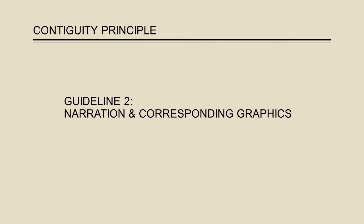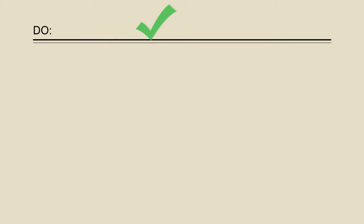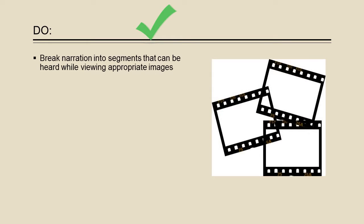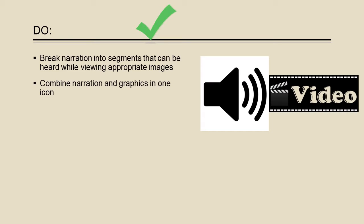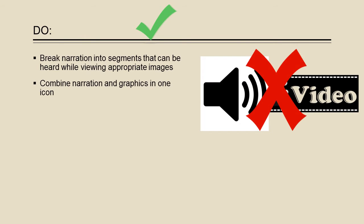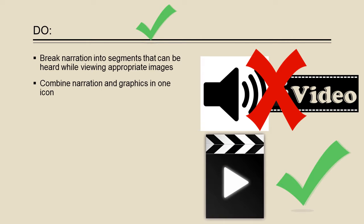The second guideline is that narrated information should be played simultaneously with their corresponding images. Some tips for achieving this include: avoid separating graphics and narration because of a long presentation. It is much more effective to break the narration into smaller chunks and play the chunks separately with their corresponding images. Finally, avoid separating graphics and narration through icons — make sure that you play both simultaneously through a shared icon.